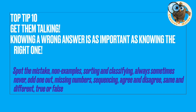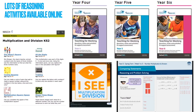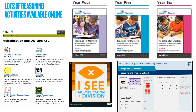Top tip 10: Get them talking. Reasoning activities are a great way to encourage children to communicate mathematically about the patterns they see. Times and division tables lend themselves beautifully to 'spot the mistake', sorting and classifying, and 'always, sometimes, never' activities because of the many patterns and structures within them. There's plenty of support online — the Nrich website, NCETM mastery documents, White Rose problem solving, and Gareth Metcalfe's I See Reasoning range. You can also search for specific patterns in a times table and build investigations around them.